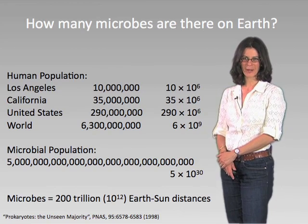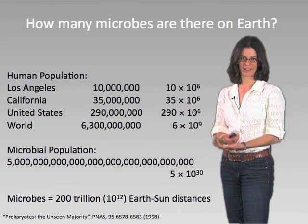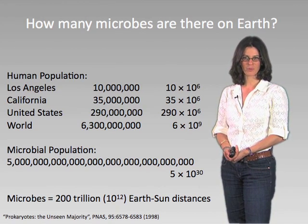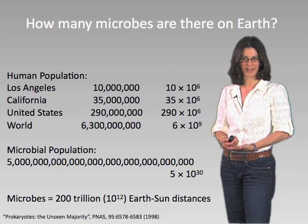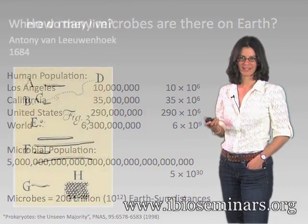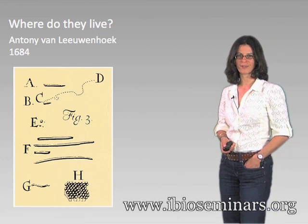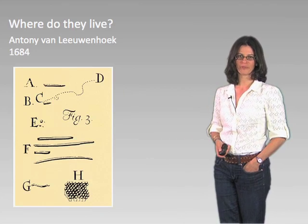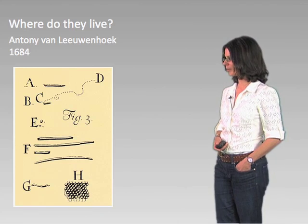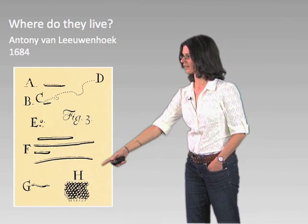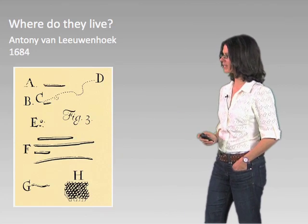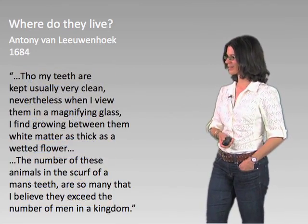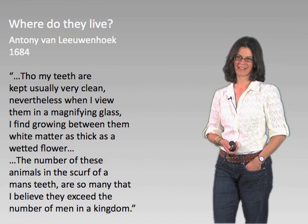Hopefully that impresses you with just how many of these creatures there are on the planet. Now, where are they if there are so many? How come we don't think about this all the time? One reason is that we're often shockingly ignorant about the fact that they're all around us — that we ourselves are really walking microorganisms. One of the first scientists to appreciate this profound fact was the father of microscopy, Anthony von Leeuwenhoek. This is a lovely image he drew from his observations through his first microscope in 1684, showing rods and cocci and even probable motility indicated by dotted lines from C to D. He reflected as he was looking through the microscope about his own teeth, and this is a very funny quote.